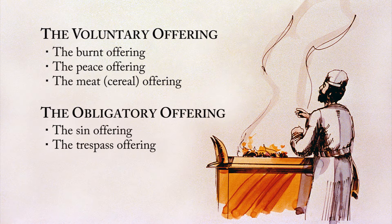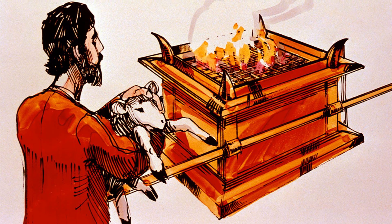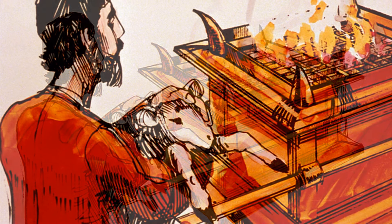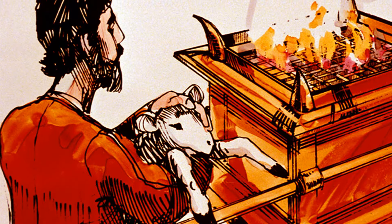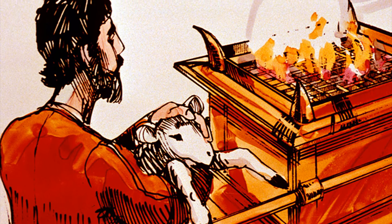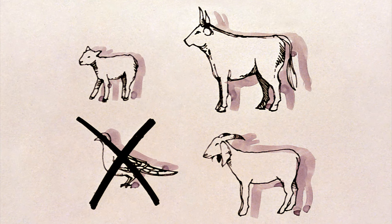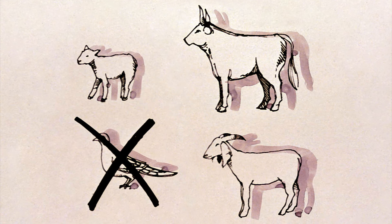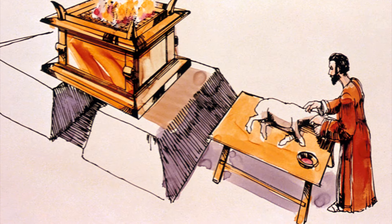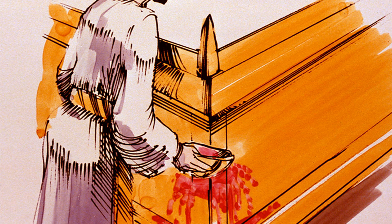Closely associated with the burnt offering was the peace offering. In fact, the latter was burned on top of the former. The purpose of this offering was either to seek or to give thanks for power in one's life by which victory, salvation, and peace were achieved. Thus, this sacrifice was offered before Israel went into battle as a way of beseeching God for assistance, as well as after the battle to celebrate victory. It was also used by individuals when making vows to God for divine assistance. The animals which the law allowed as acceptable for this sacrifice were either a male or female ox, sheep, or goat. No birds were acceptable. As with the burnt offering, the offerer brought the animal to the north side of the altar, killed it, and skinned it. The priest then sprinkled its blood on the sides of the altar.